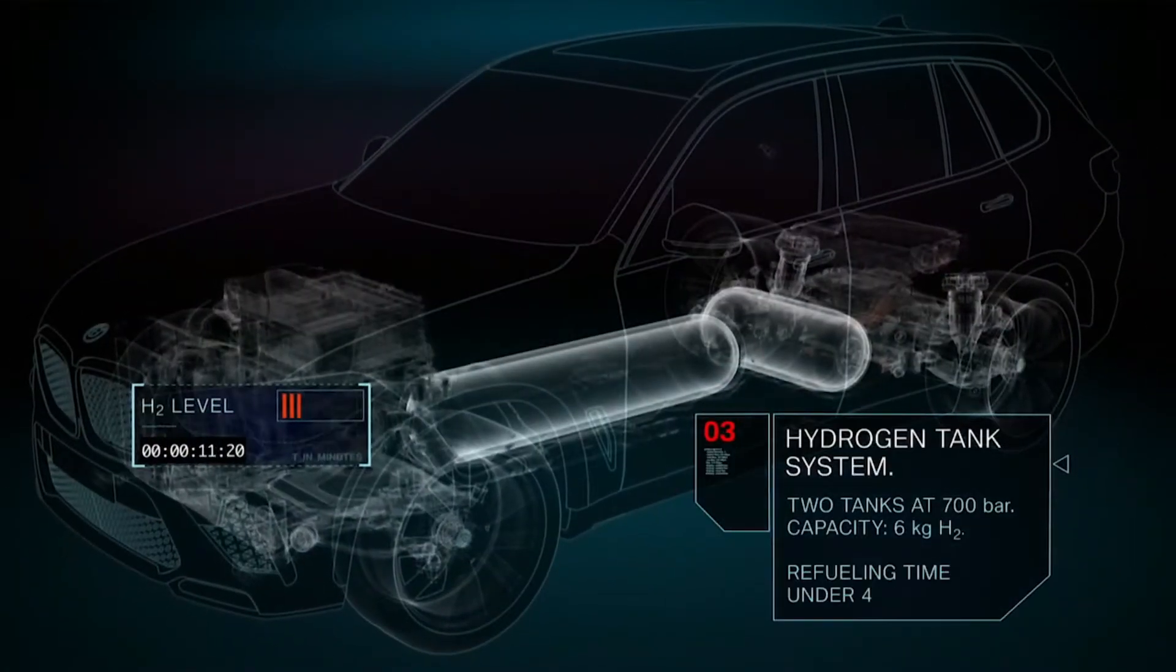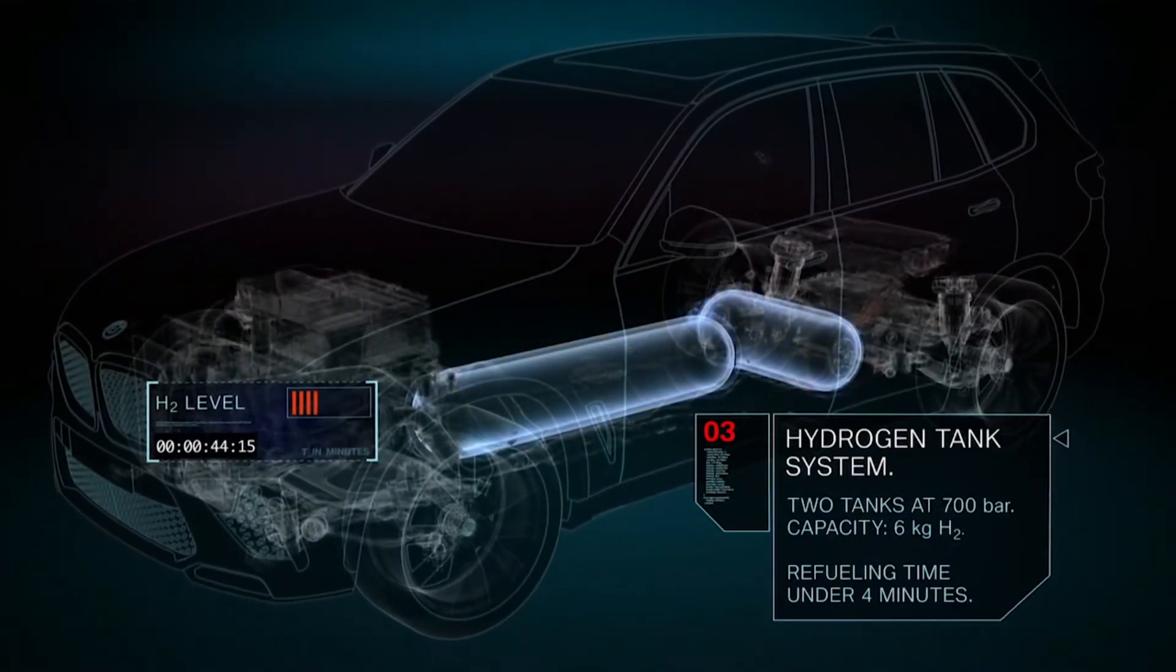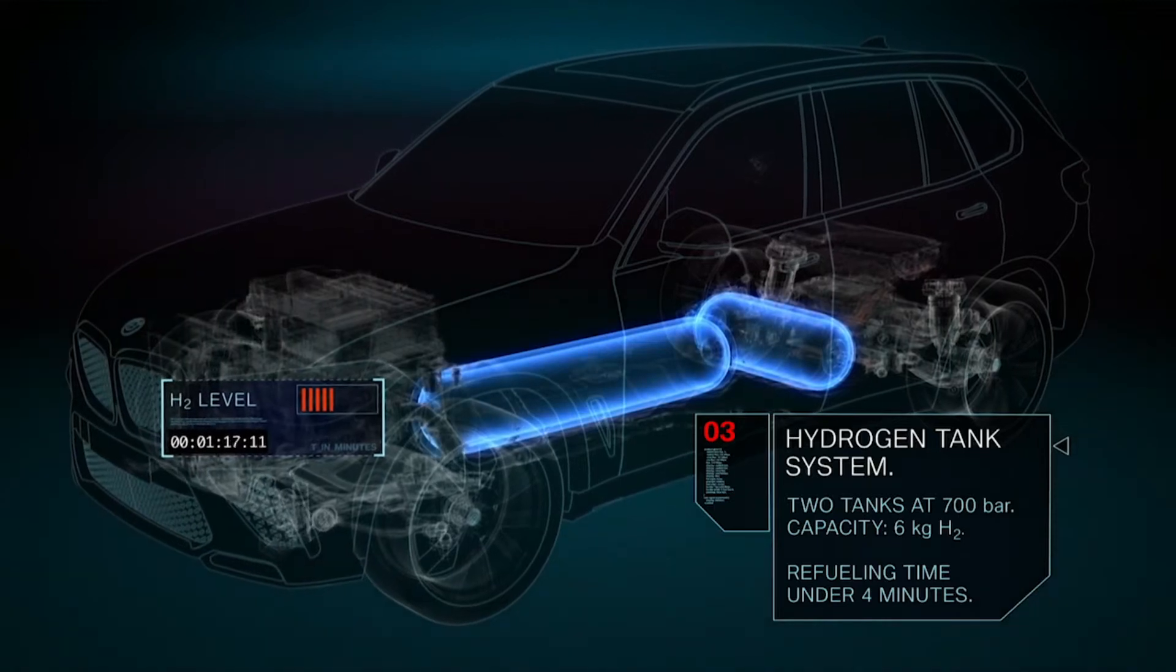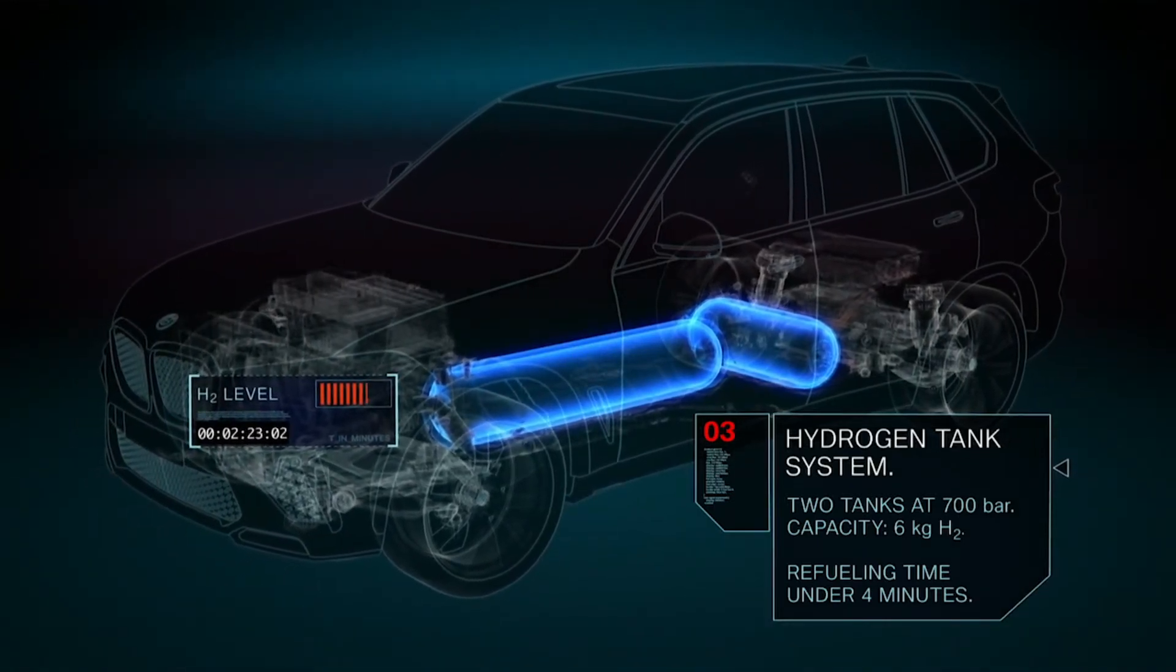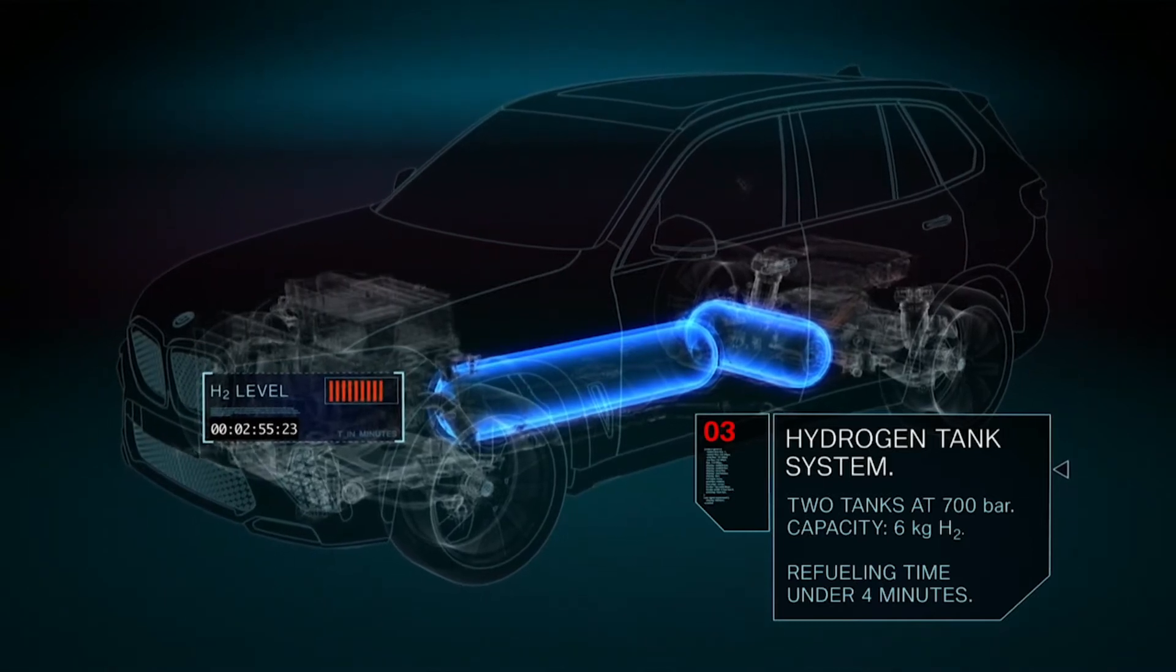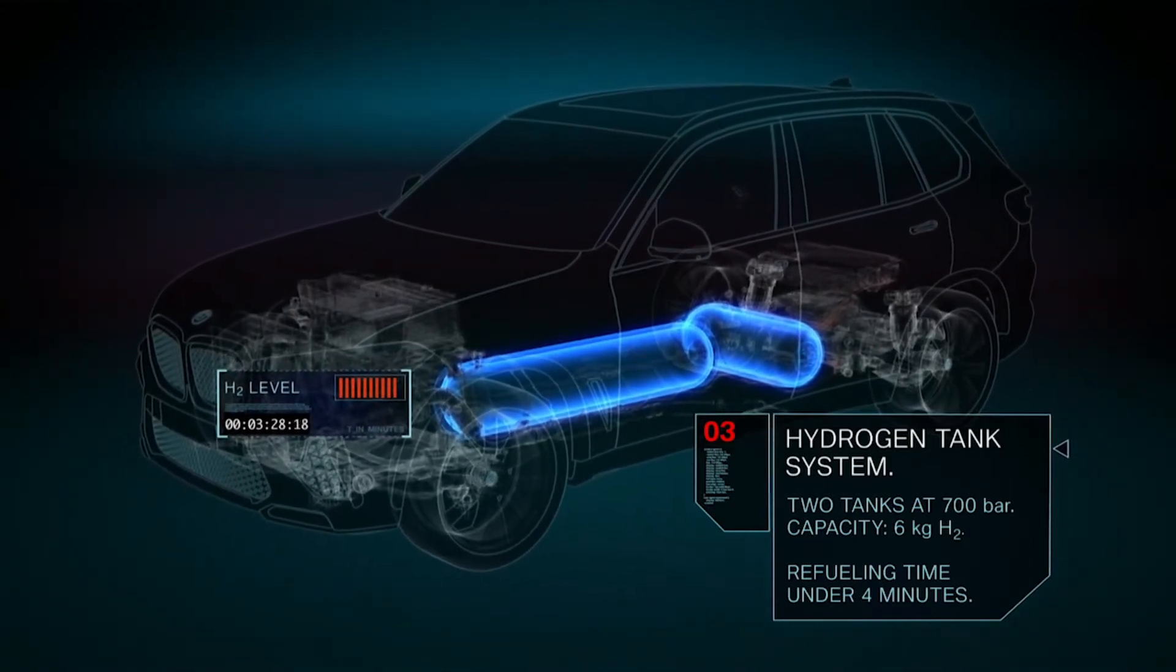The vehicle is fitted with two 700 bar tanks containing 6 kilograms of hydrogen in total. This enables long operating ranges in any climate conditions. The refueling process takes just 3 to 4 minutes.